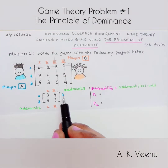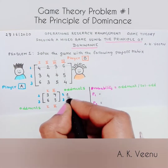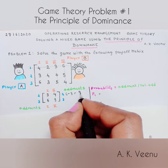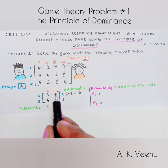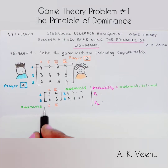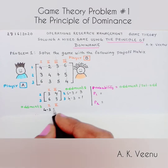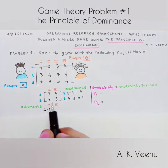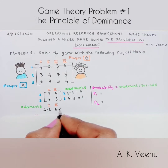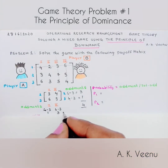The next step is to find the oddments. To find oddment 2 for player A, subtract the elements of the third row: 6 minus 3, which equals 3. Oddment 3 would be 4 minus 3, which equals 1. To find oddment 1 of player B, subtract the elements of the second column: 4 minus 3, which equals 1. Oddment 2 of player B is found by subtracting the elements of the first column: 6 minus 3, which equals 3.